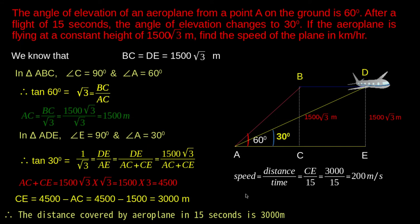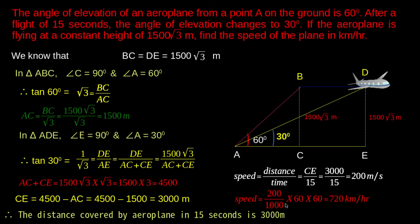To find the speed of the plane: speed = distance travelled divided by time taken = CE/15 = 3000/15 = 200 meters per second. But it is asked to find the speed in kilometers per hour. Therefore, we convert: 200 meters per second = 200 × 3600/1000 = 720 kilometers per hour. This is the speed of the plane.